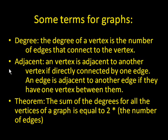Adjacent means that a vertex would be adjacent to another vertex if they are connected directly by one edge. An edge would be adjacent to another edge if they are connected by one vertex in between them.